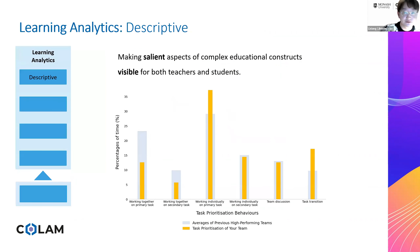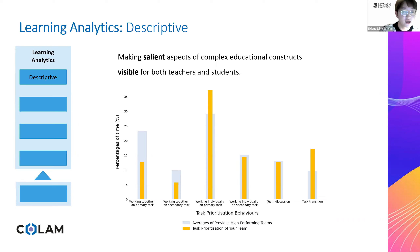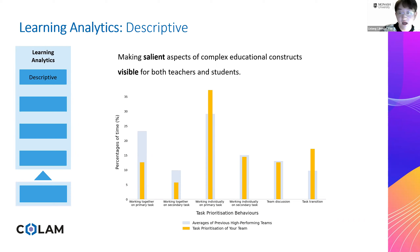Using these analytic approaches we can generate four different types of learning analytics. Descriptive analytics that capture students' and teachers' social spatial behaviors can be generated through data aggregation, summative statistics, and data visualization. Although these analytics only provide insights about past behaviors, they contain significant educational value and can be integrated into supportive technologies to aid reflective practice by making salient aspects of complex educational constructs visible. These analytics are often presented as timelines, heat maps, and networks to illustrate trends and patterns, for example showing students their social spatial behaviors compared to the average of previous high-performing teams.